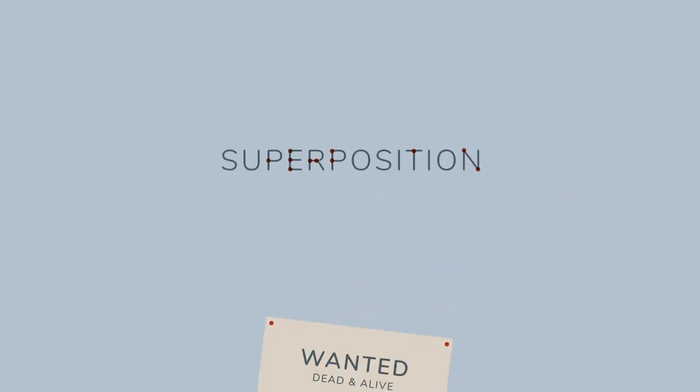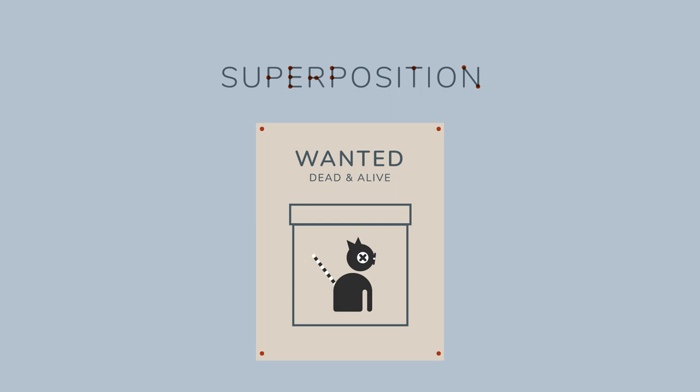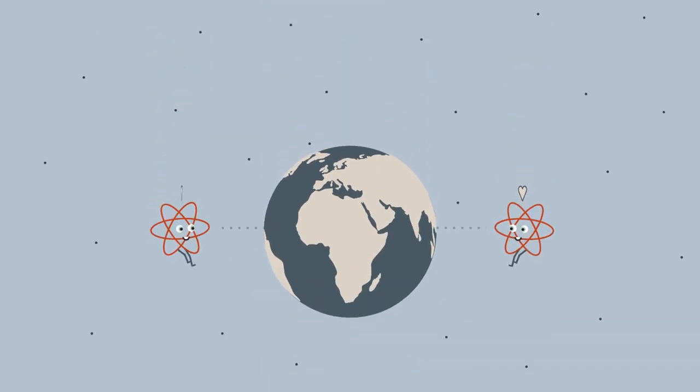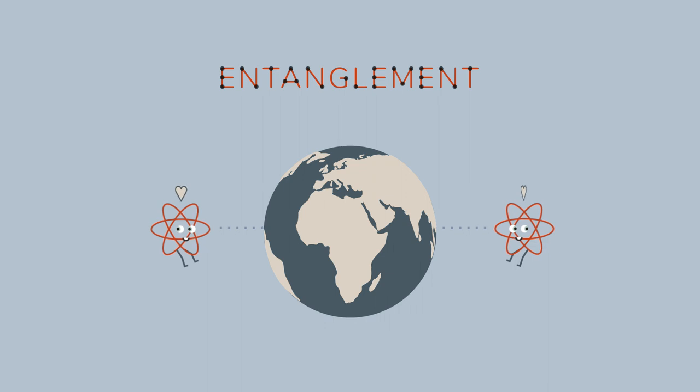These objects can be in superposition, meaning that they can exist in different states at the same time. Or they can be strongly connected without being in the same place, something quantum physicists call entanglement.